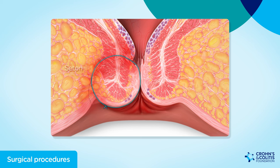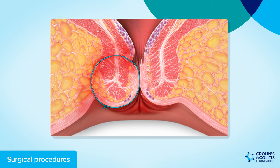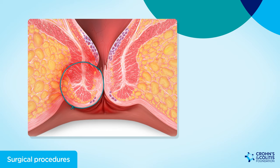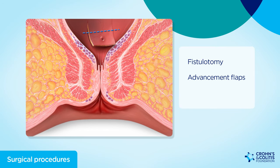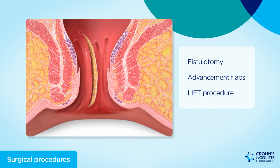A seton may be placed so that the fistula can drain any pus associated with infection. Other options include fistulotomy, advancement flaps, and the LIFT procedure for complex cases.